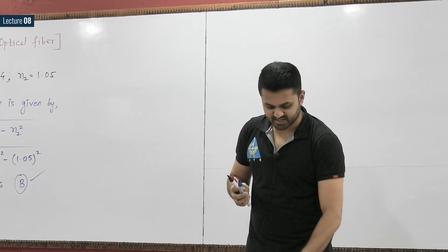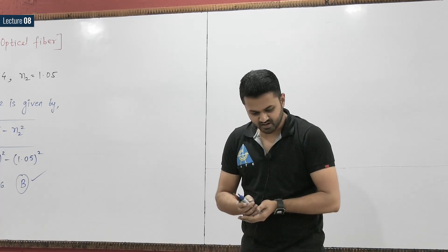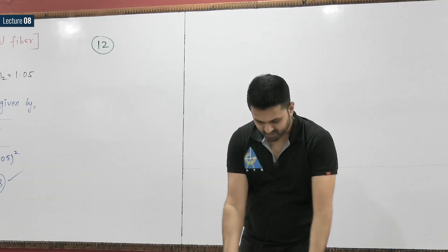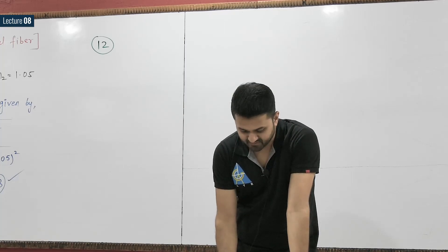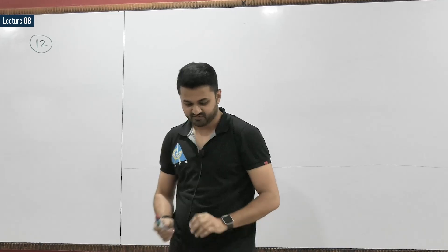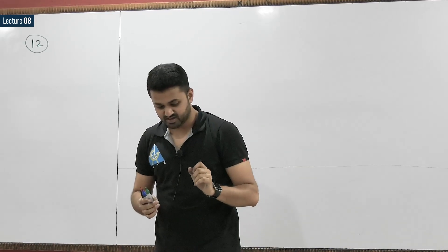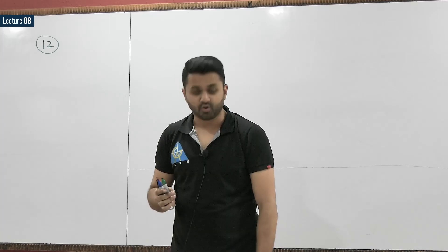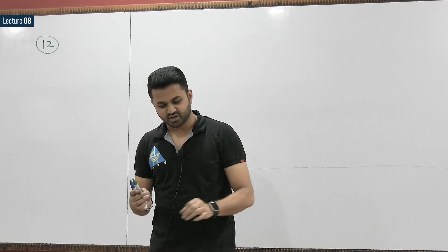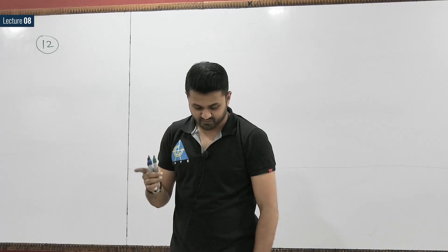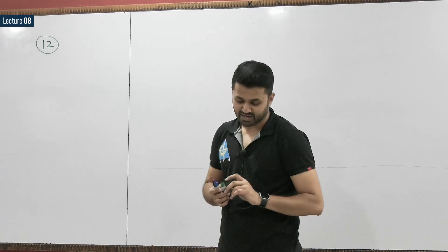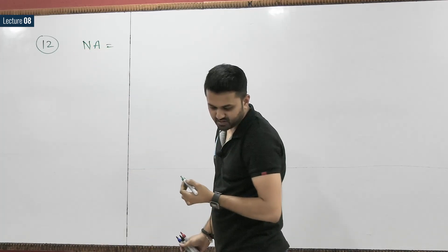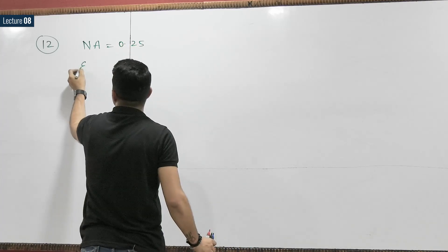This is a very simple formula-based question, the type asked in GATE. Next is question number 12: The cladding material of a step index fiber has a relative permittivity of 2.4375. Assuming both core and cladding materials to be non-magnetic, in order to have a numerical aperture of 0.25, the refractive index of the core should be? Here, the numerical aperture is given as 0.25 and the relative permittivity of the cladding is 2.4375.